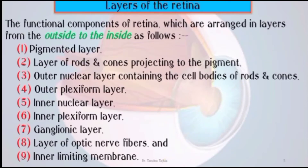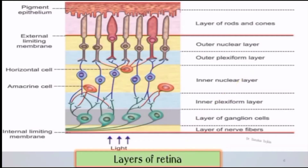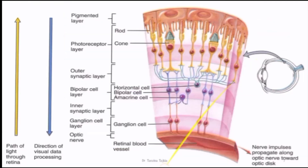The functional components of the retina are arranged in layers from outside to inside: the pigmented layer, layers of rods and cones, outer nuclear layer, outer plexiform layer, inner nuclear layer, inner plexiform layer, ganglionic cell layer, layers of optic nerve fibers, and the inner limiting membrane. This is shown in the figure of the layers of the retina.